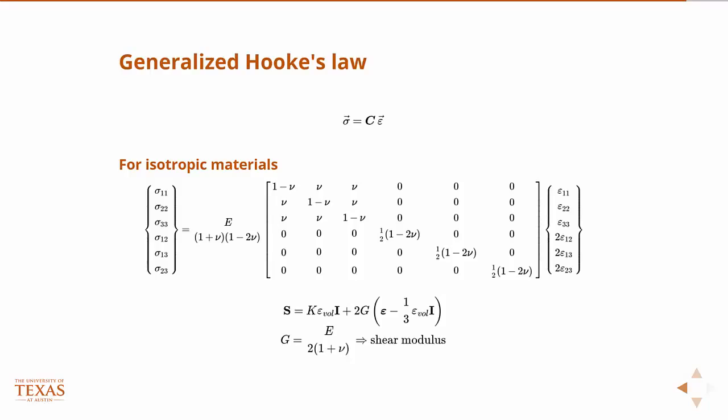We can also write it more compactly. So going back to our tensor notation, or our matrix notation, we can write it like this. Where we use K is the bulk modulus times the volumetric strain. Remember what I said, the bulk modulus times the volumetric strain, just using our equation for the definition of the bulk modulus, gives you the mean stress, right?